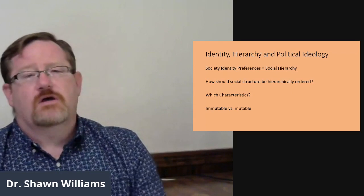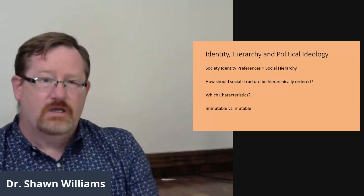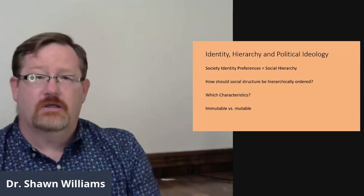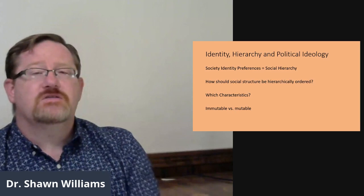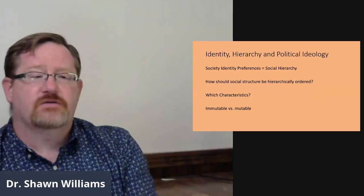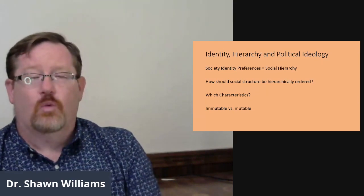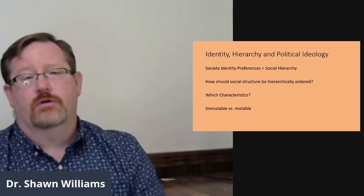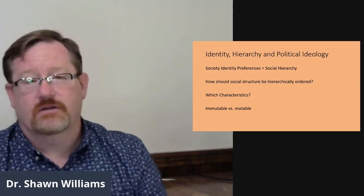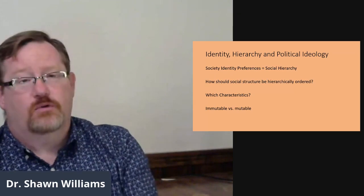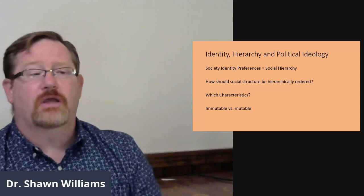So what does all this mean? First of all, it means that because we have identity, we end up with social hierarchy as an inherent part of just about any society. But societies differ in a number of fundamental respects. How should society be ordered? What characteristics are most important? Are these characteristics immutable characteristics like race or even nationality? Or are they mutable characteristics, things that we can change about ourselves, like our occupation or our wealth or our income?